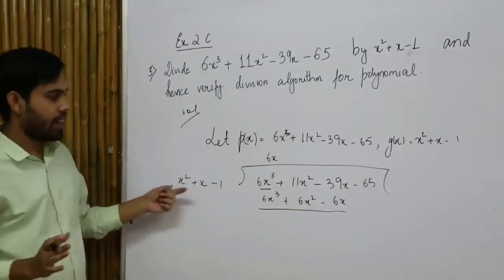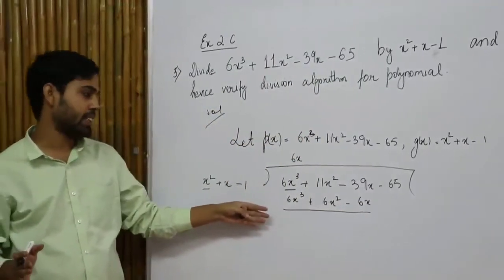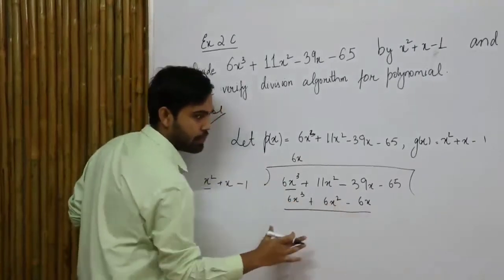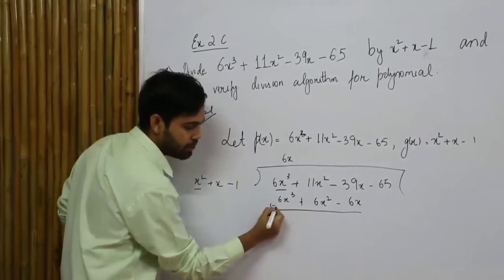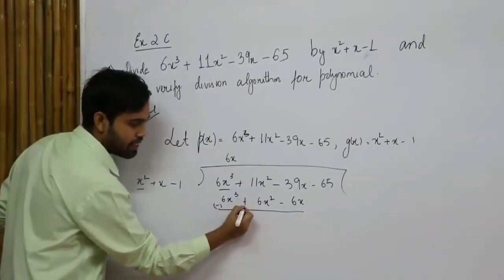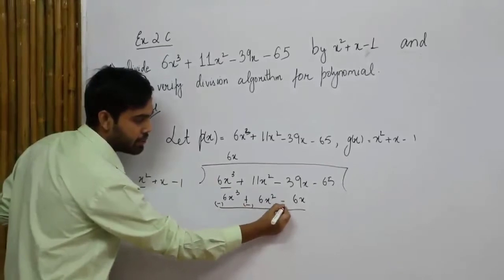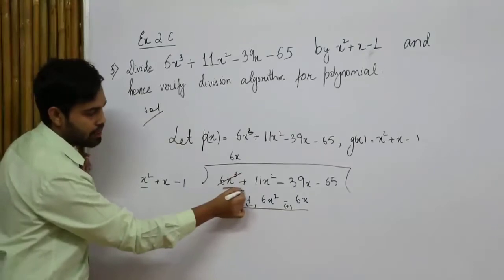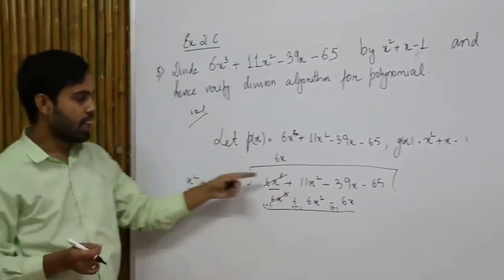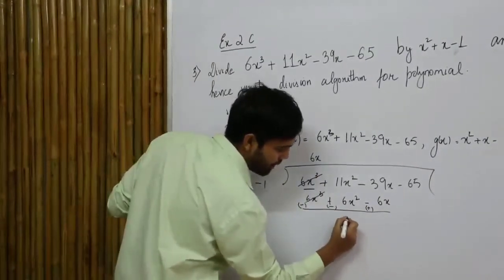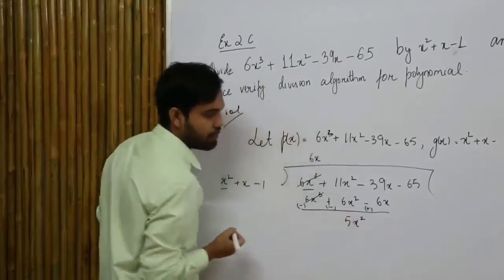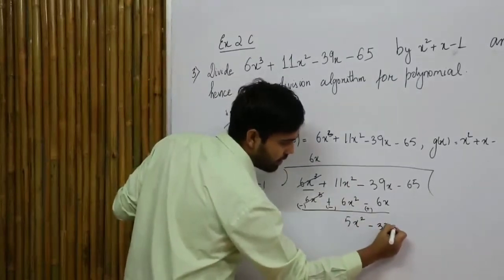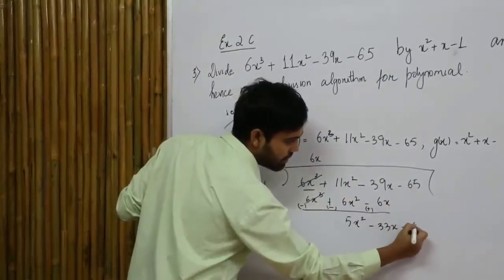Now looking at 5x squared and x squared: I multiply by 5 to get 5x squared. This gives 5x squared plus 5x minus 5. Subtracting — signs change to minus 5x squared, minus 5x, plus 5 — the 5x squared terms cancel, leaving minus 38x and minus 60.